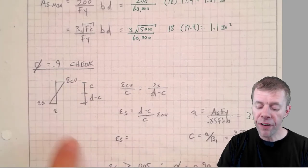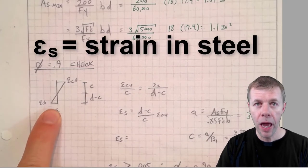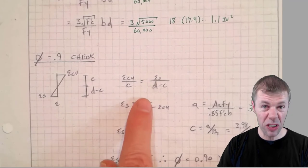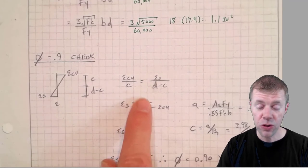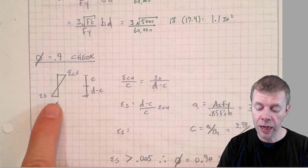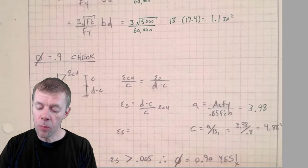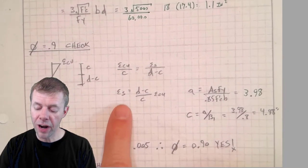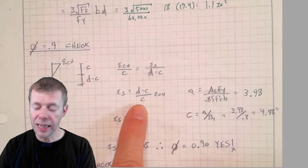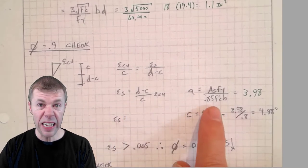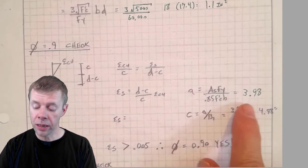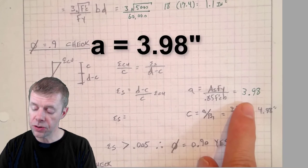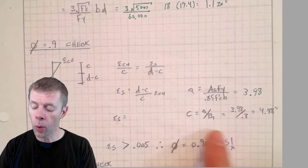So I have to find the strain in my steel and I'm going to use this funny equation which is based on similar triangles. I'm going to move it around to find this. Now I'm going to need my c, but to get c I need a.